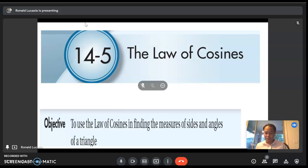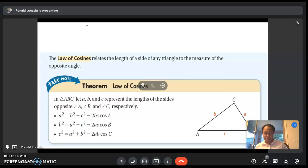The Law of Cosines relates the length of a side of any triangle to the measure of the opposite angle.